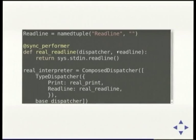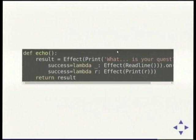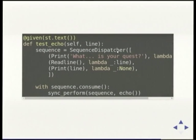If I wanted to be able to read something in, I would create a ReadLine named tuple and define a production implementation of it — sys.stdin.readline — and update my dispatcher. This is one of the costs: your interpreter has to be expanded every time you add a type. But I can now write a more powerful program — if it succeeds I want to read it back in and then print it back out again. Testing this uses Hypothesis, so it's just throwing random data at it — a wonderful thing.